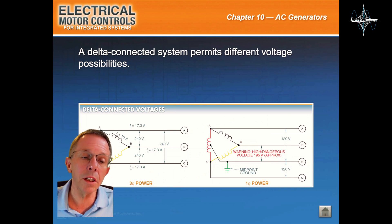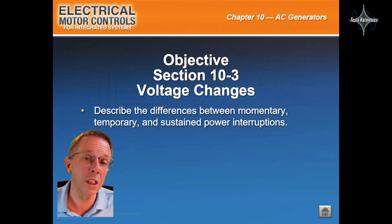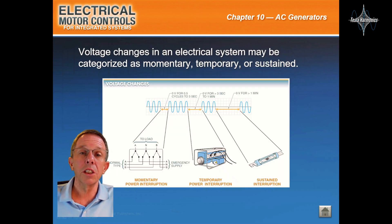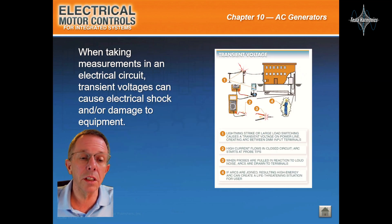A delta-connected system permits different voltage possibilities. This will be voltage changes. Voltage changes in an electrical system may be categorized as momentary, temporary, or sustained. When taking measurements in an electrical circuit, transient voltages can cause electrical shock and/or damage to equipment.